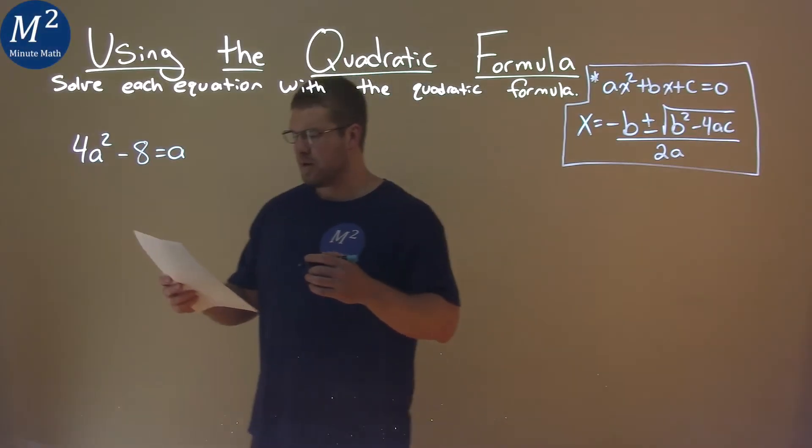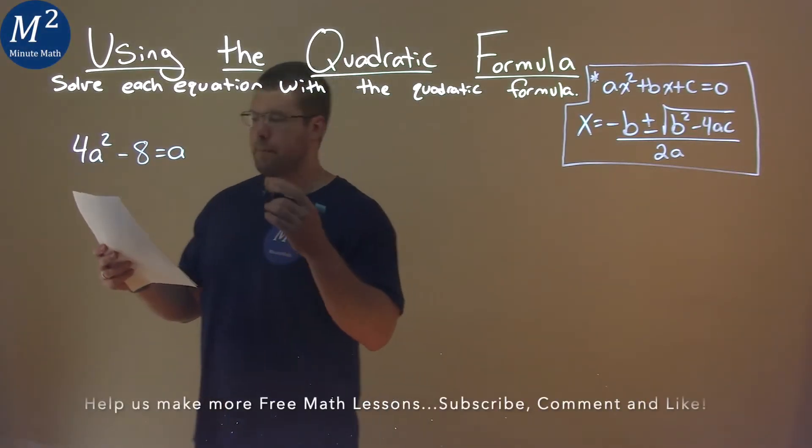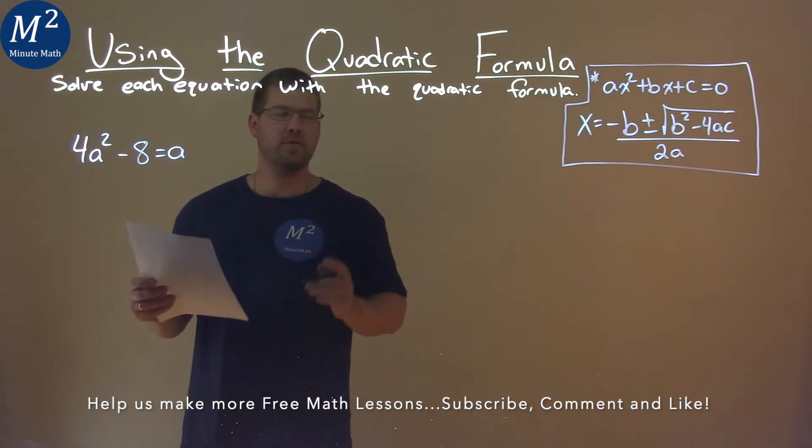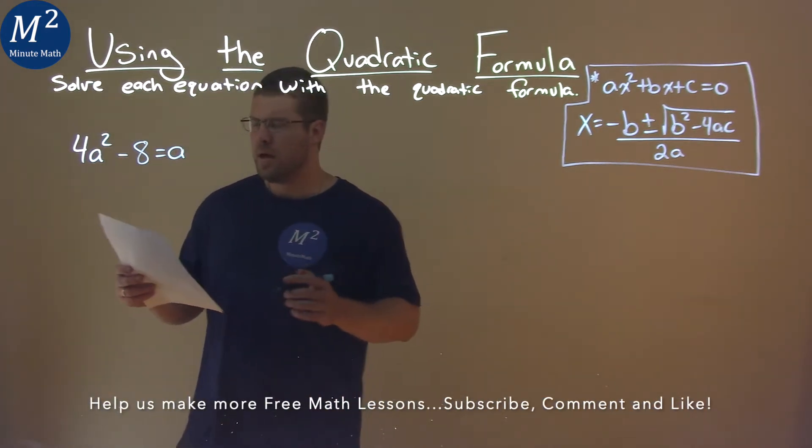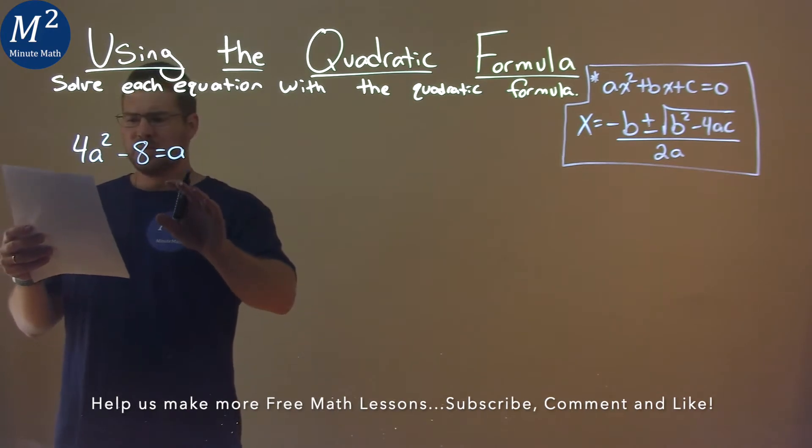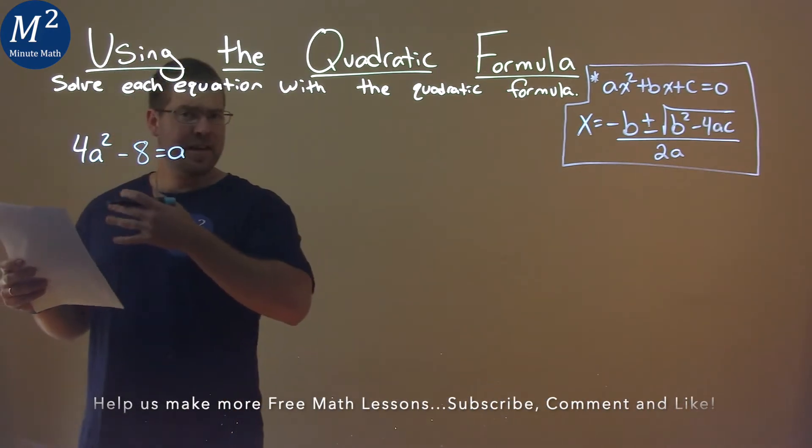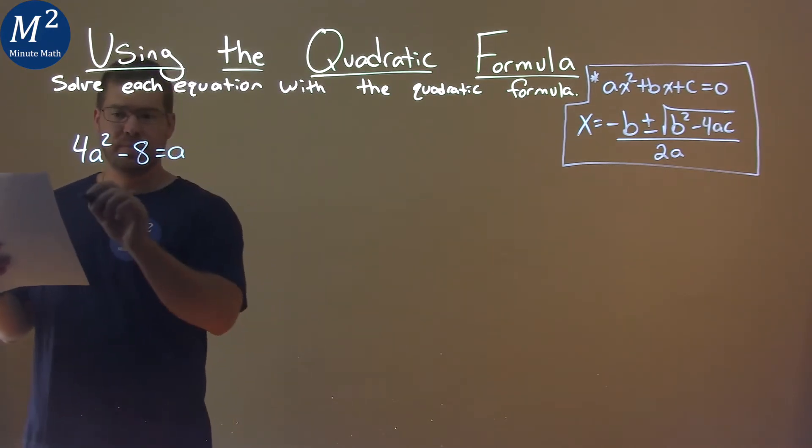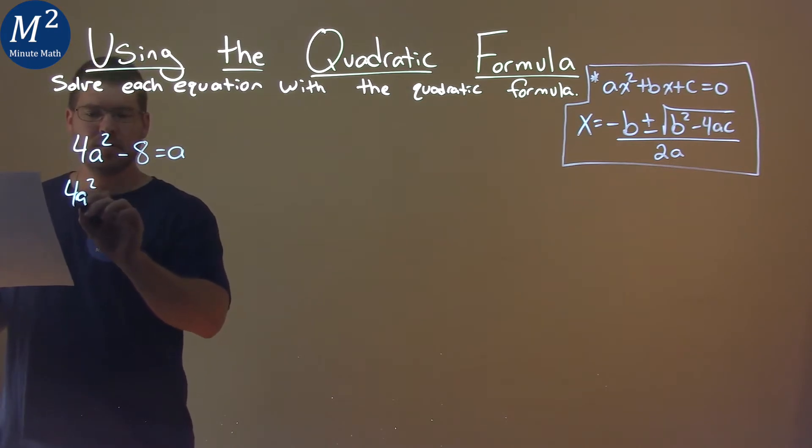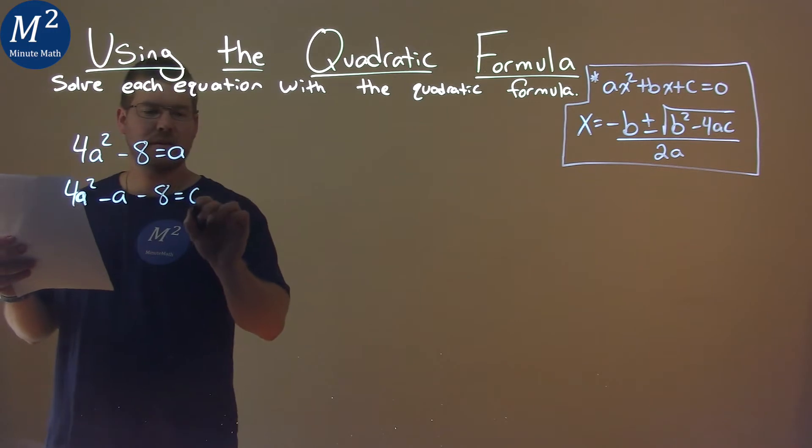We're given this problem right here: 4a² - 8 = a, and we need to solve this using the quadratic formula. First thing I want to do is bring the a over to the left-hand side to get this equation equal to zero. So, 4a² - a - 8 = 0.